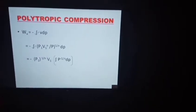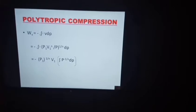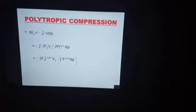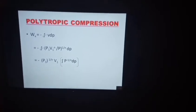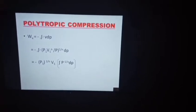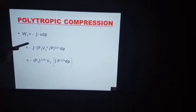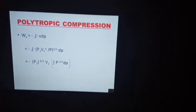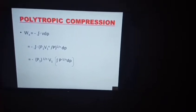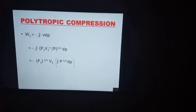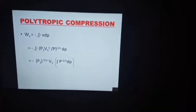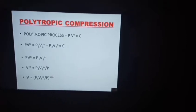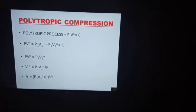The formula for calculating work for a compressor is minus the integral of V dP — the minus sign represents that it is a power-absorbing device, since a compressor is a power-absorbing device. We put the limits 1 and 2 on the integral: minus integral from 1 to 2 of V dP. We already derived the expression for V in the previous step, so we substitute that V here.